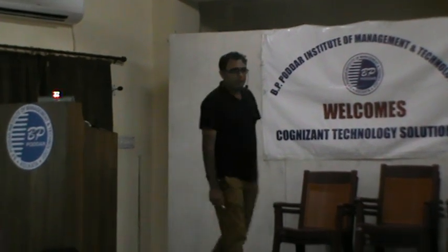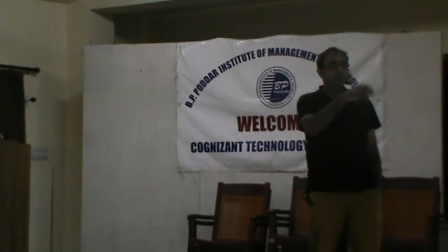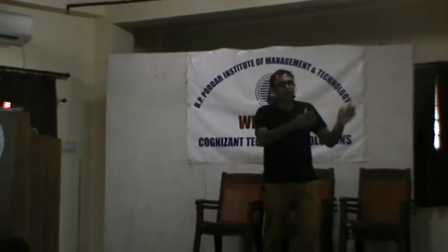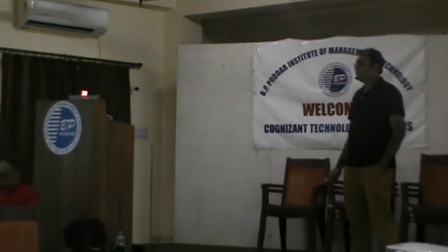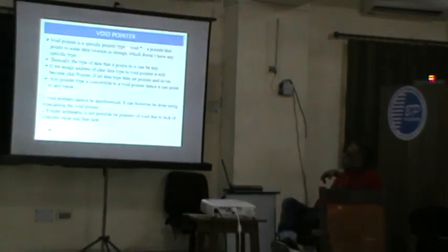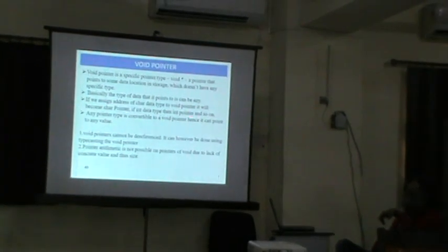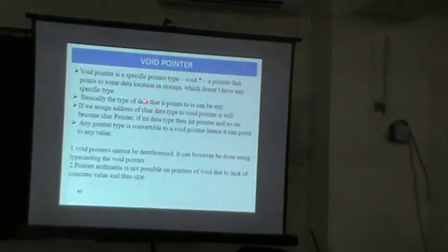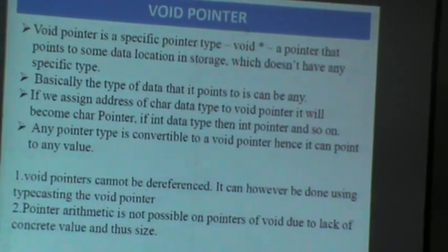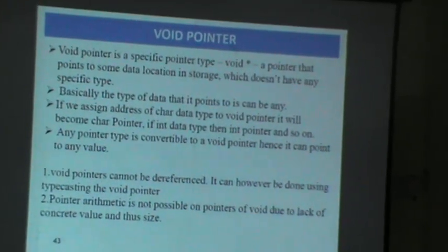The void pointer is a special type of pointer because functions like malloc and calloc return a void type pointer. You can map a void pointer with any type of data type — that is the main importance of the void pointer. A void pointer points to some data location in storage but does not have any specific type. If you point a character data type to a void pointer, it becomes a character pointer; if an integer data type, it becomes an integer pointer.